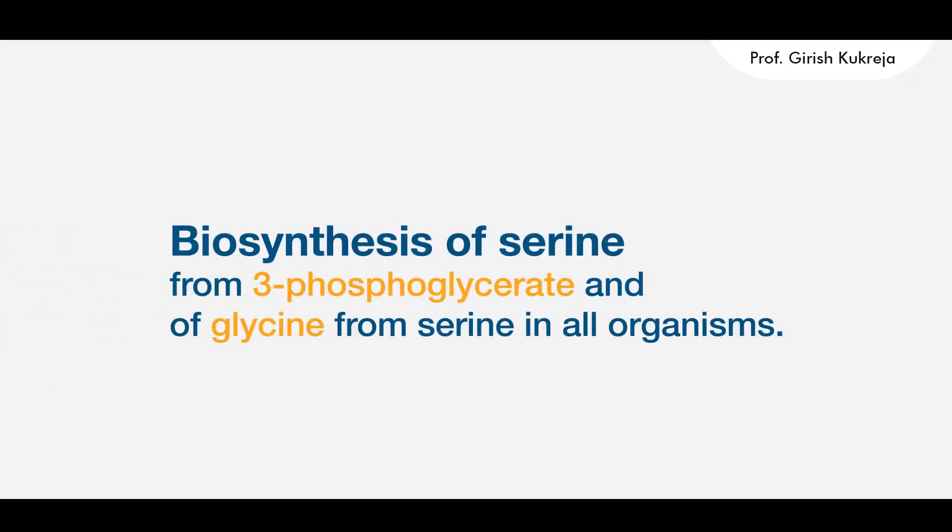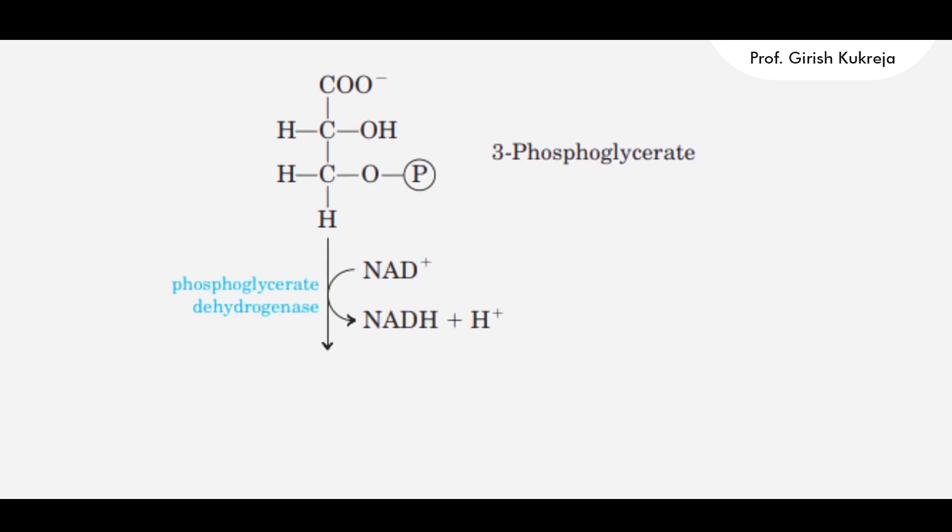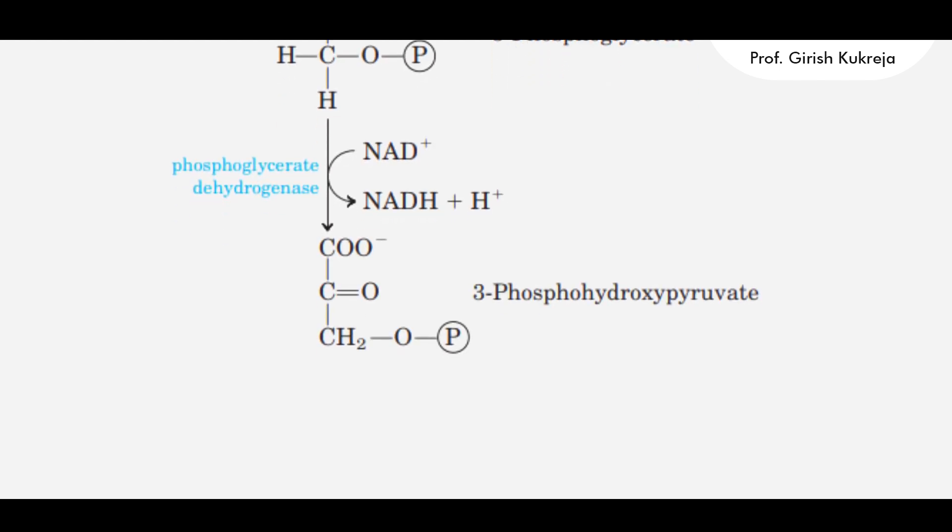The formation of serine has a similar pathway in almost all organisms. It starts with 3-phosphoglycerate which undergoes the first step of oxidation by phosphoglycerate dehydrogenase. The removed hydrogens are accepted by NAD+, forming NADH and H+. 3-phosphoglycerate after oxidation of the hydroxyl group gets converted to 3-phosphohydroxypyruvate.